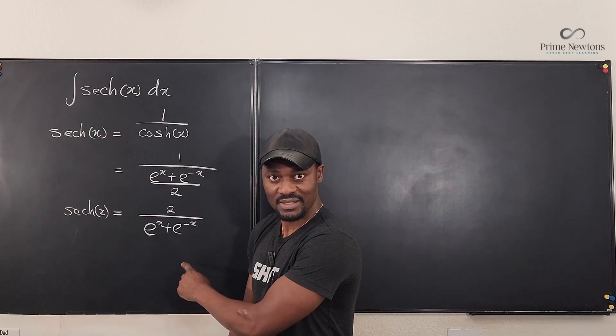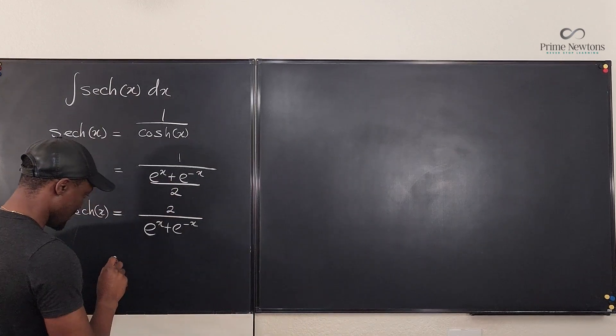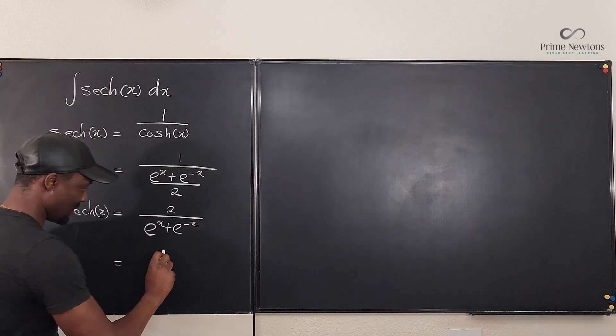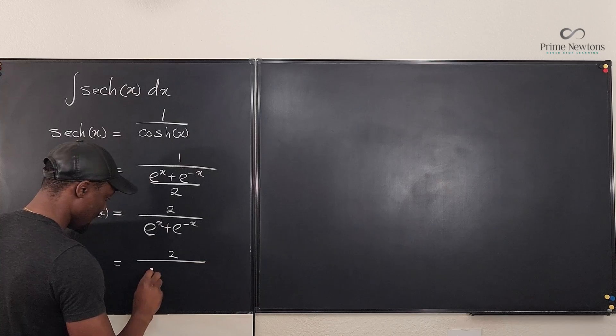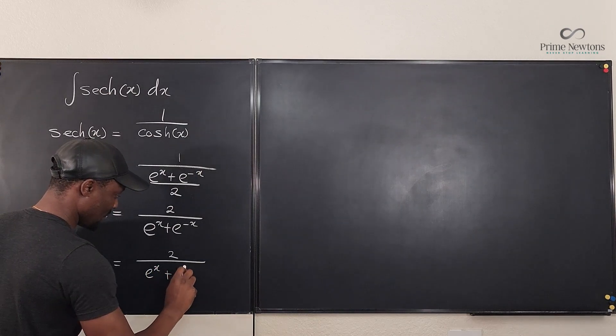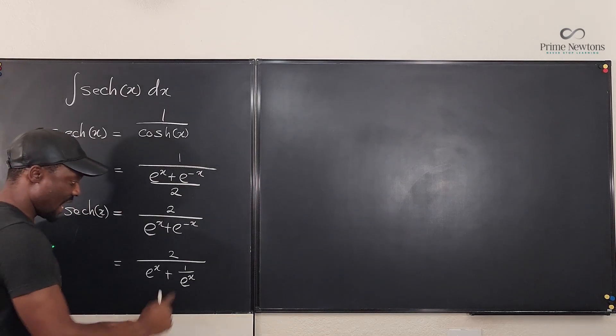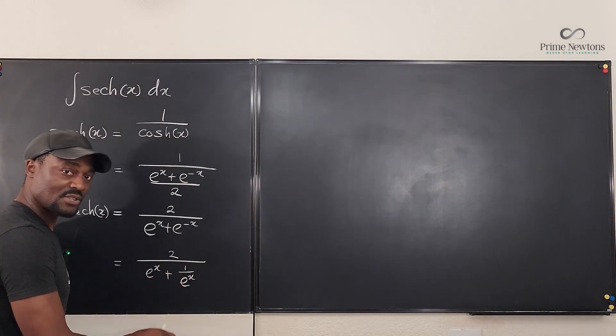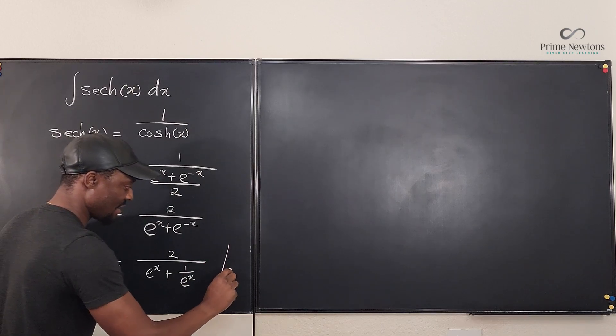Because I can see this as, look at this: This is the same thing as 2 over e to the x plus 1 over e to the x. That's the nicest way to put it. And to get rid of a fraction within a fraction, you can just multiply the top and bottom by e to the x. We write it this way.